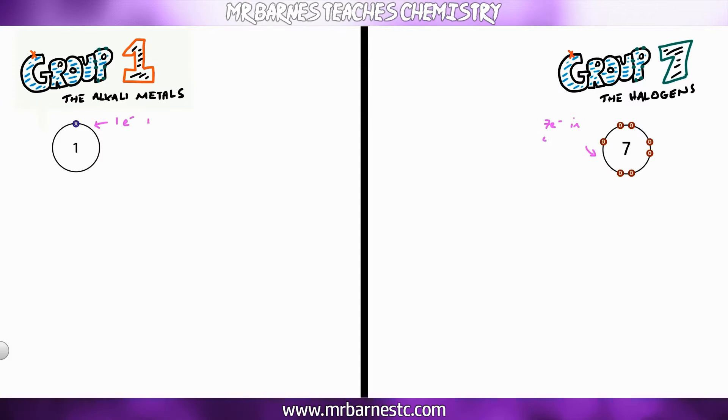If you remember group 1 has one electron in the outer shell and group 7 has 7 electrons in the outer shell which means that group 1 metals want to lose electrons and group 7 want to gain them. That's massively important.